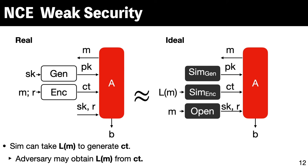For example, if L is a constant function, then the weak security is the same as the full security. If L is the identity function, the weak security ensures nothing. Depending on L, we can define various levels of security.